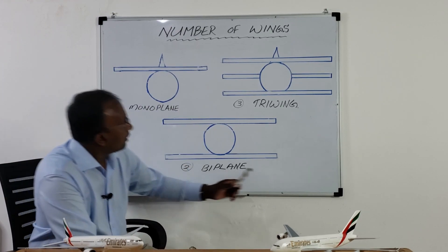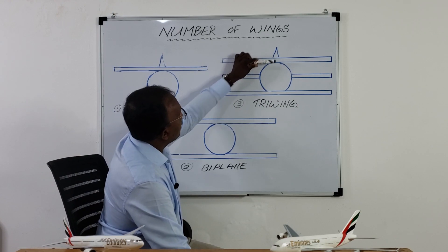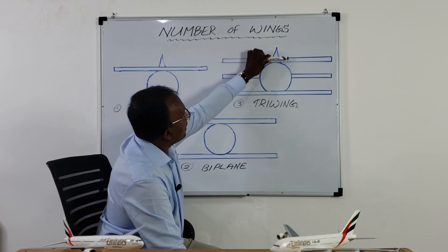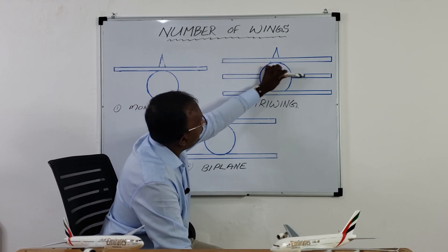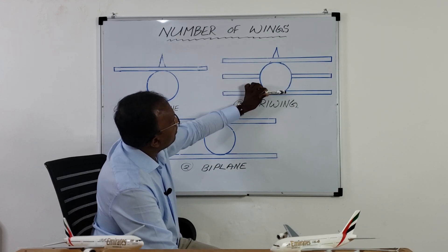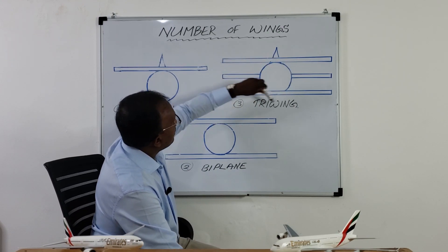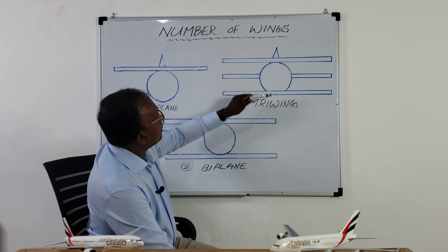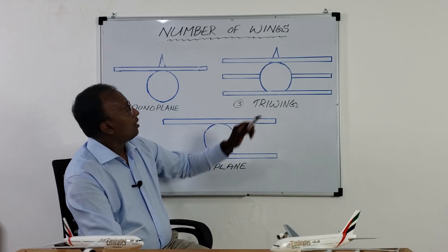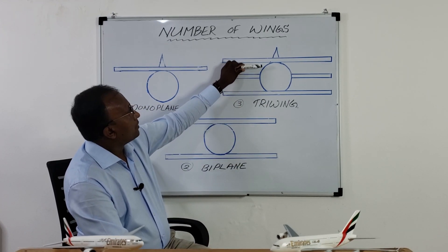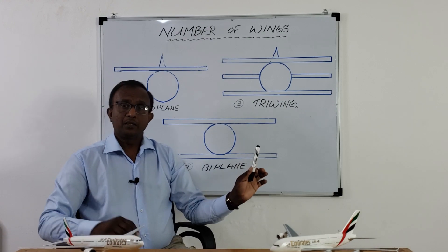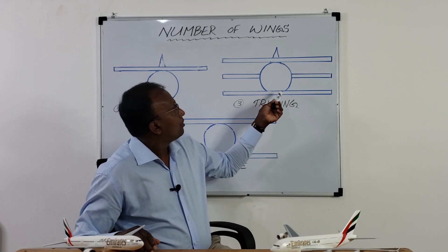This one is having three wings: one above, one in the middle position of the fuselage, and one in the lower position. This is the tri-wing. More than three wings are not practical.